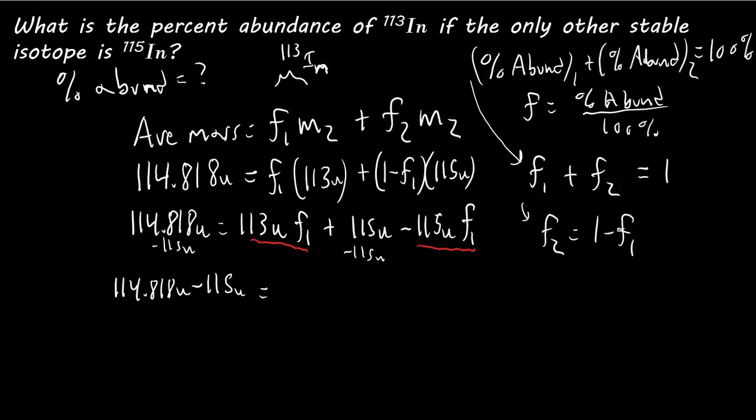So, to do that, we'll have 113 u minus 115 u, F1. And, see how this F1, there's an F1 in each term, I just factored it out. If we expand this back into the brackets, we would get the same thing. And, now we divide both sides by 113 minus 115 u.